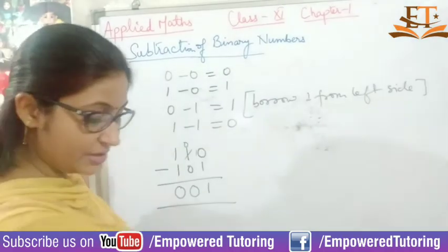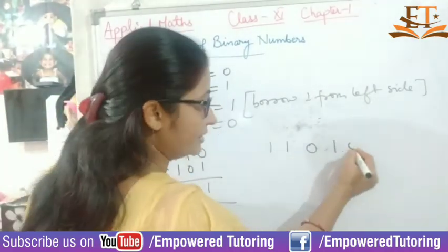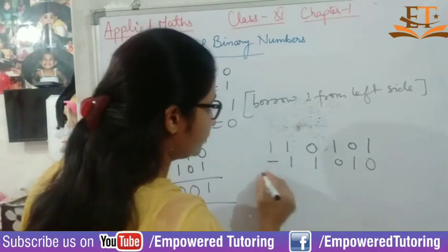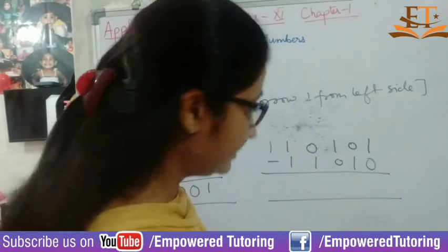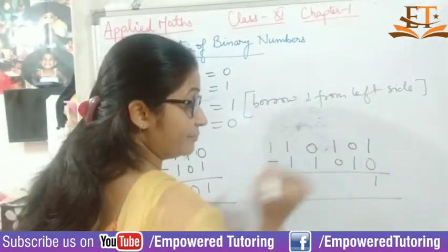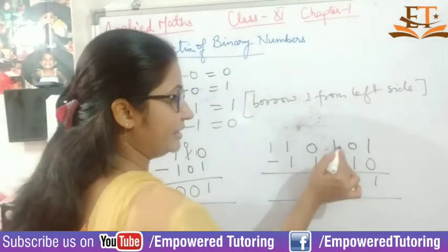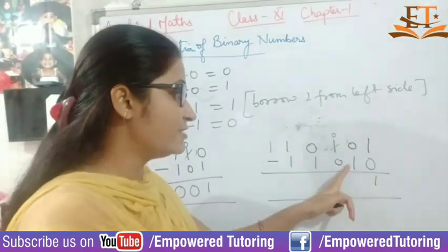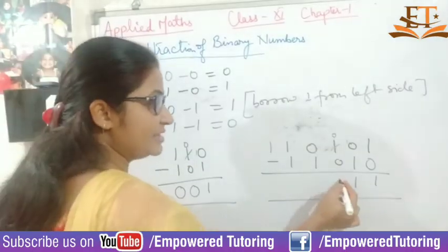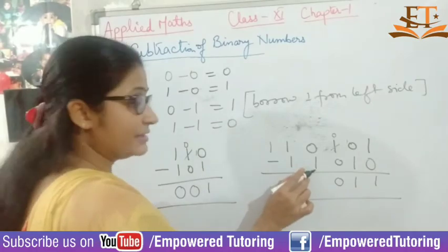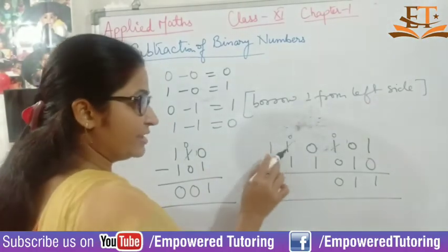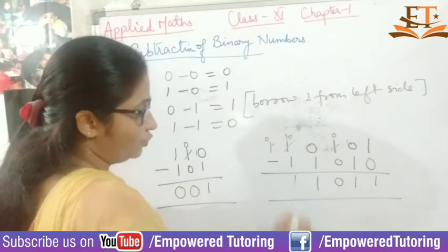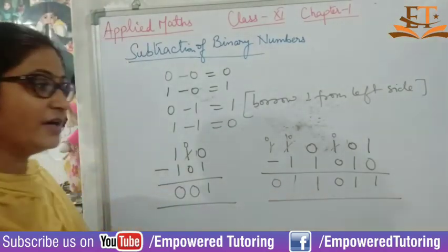Next question: we have 110101 and we subtract 01011. Let's work through it — 1 minus 1 is 0, and here we also get values by borrowing as needed. Working through each position, the result is 011011.